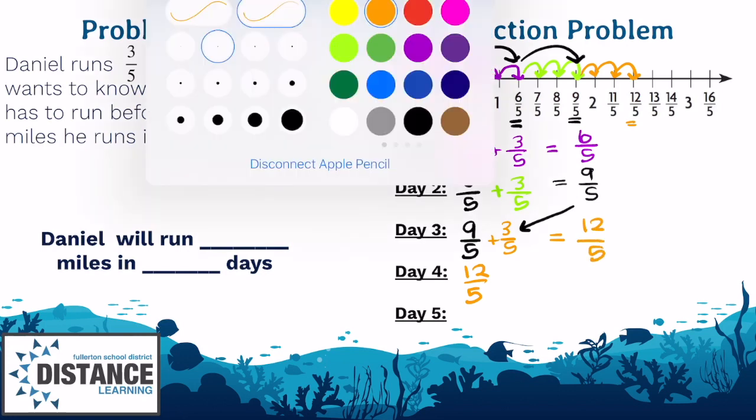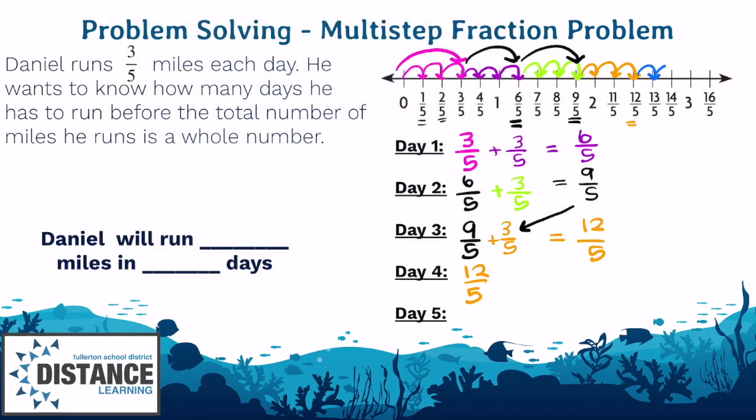So let's go to day five. Daniel's going to take three steps again because it's three-fifths. And he lands on three. So how do we get three? Well, we know twelve over five plus three over five is fifteen over five. And fifteen over five, if you simplify it, is three. How many days did it take for Daniel to run a whole number? As you can see, on day five, he ran three miles. So he will run three miles in five days.